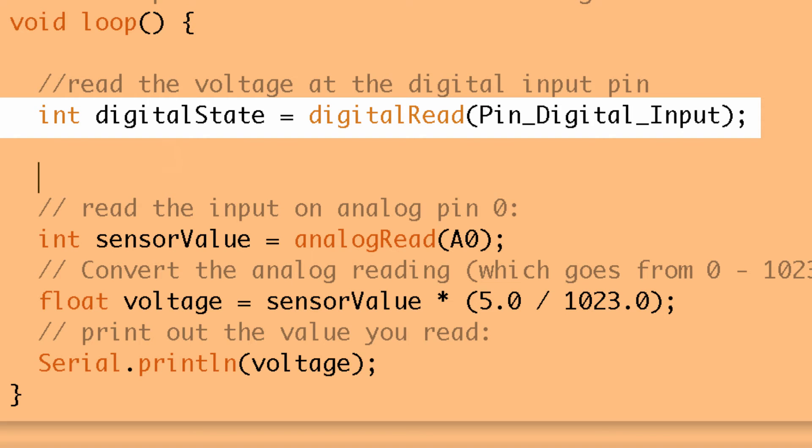It's going to return whether or not it's a low voltage or a high voltage at that pin. If it's a low voltage, it returns the number zero. If it's a high voltage, it returns the number one. And that value, that zero or one, will be applied to the digital state variable. So digital state will be set equal to zero or one, depending on the state of pin two.